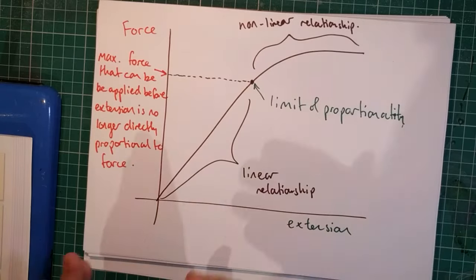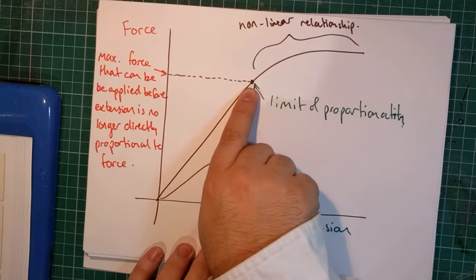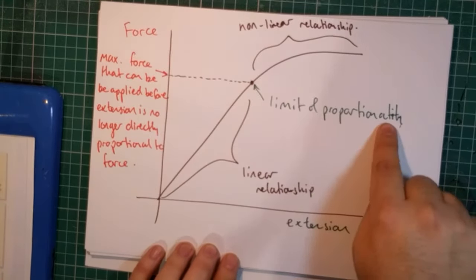It may not be perfectly straight, but I didn't use a ruler. I should have. Up to this point here. This is called the limit of proportionality.